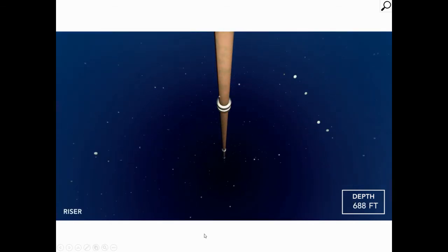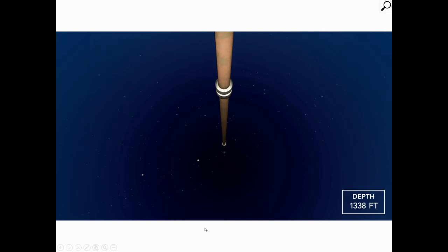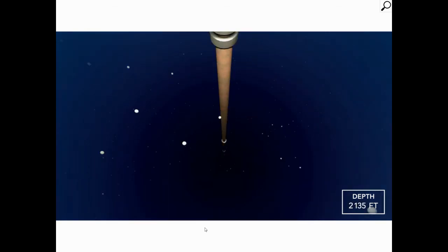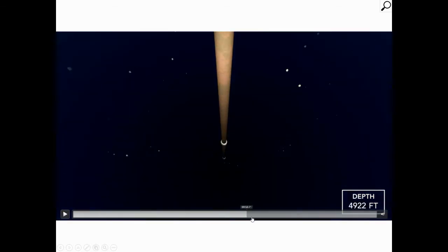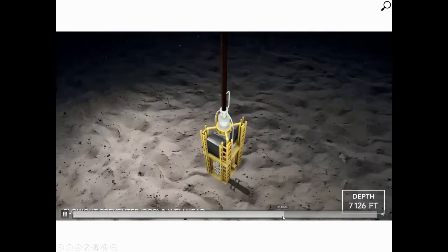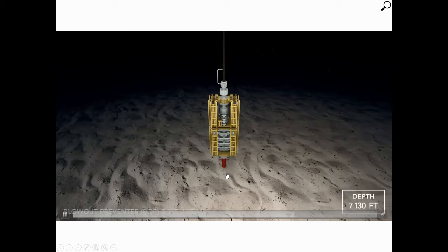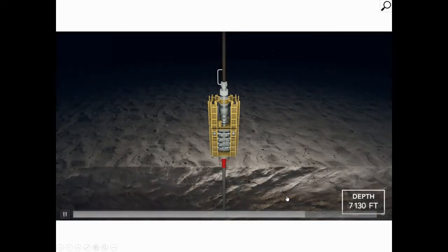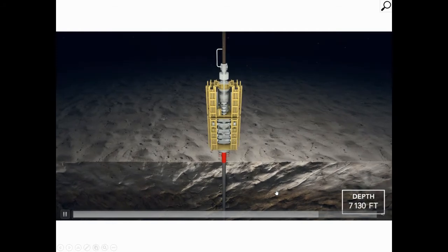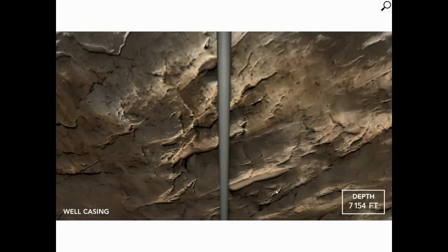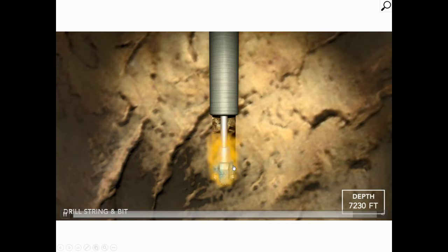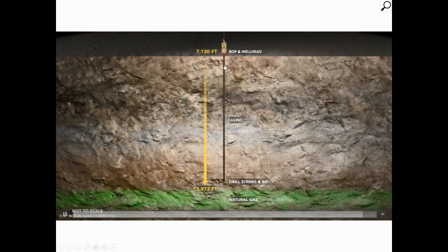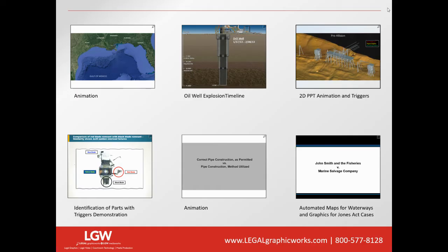That was really important to the attorneys as well as their client, because there is a lot of expense associated with this. They really wanted to illustrate the depth and complexity involved with completing this project. Here you have the wellhead and blowout preventer, and they also wanted to show what's going on below the ocean floor. You can zoom down to an even further depth and see the spinning of the bit — and this is exactly how far we're talking about.